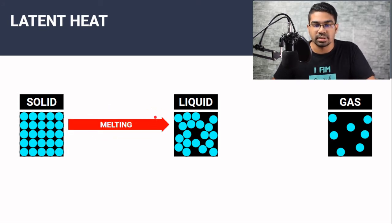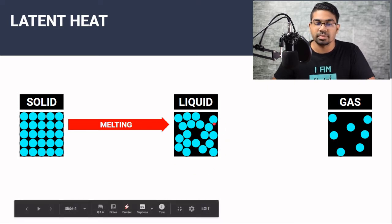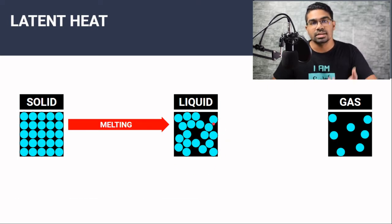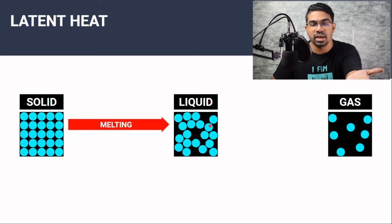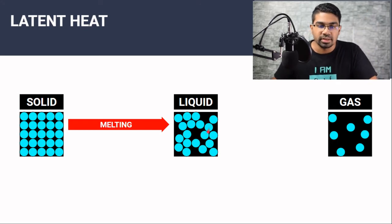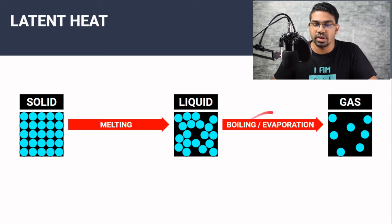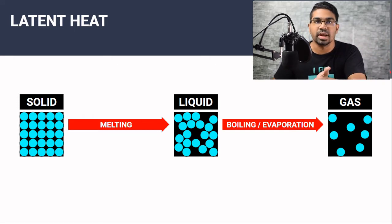The process is known as melting, and the same thing applies to liquids. When liquids are supplied with enough heat energy, this heat energy is used to overcome the forces of attraction between the water particles, and the water will then become gas — it will become steam. This process is known as either boiling or evaporation. The heat energy supplied during these changes of phases of matter is what we call the latent heat.